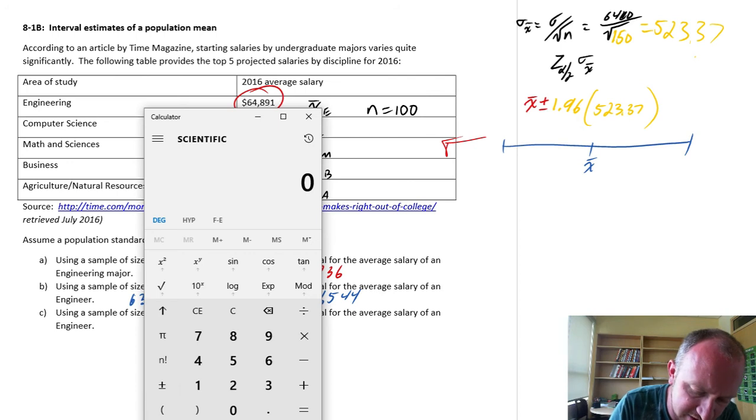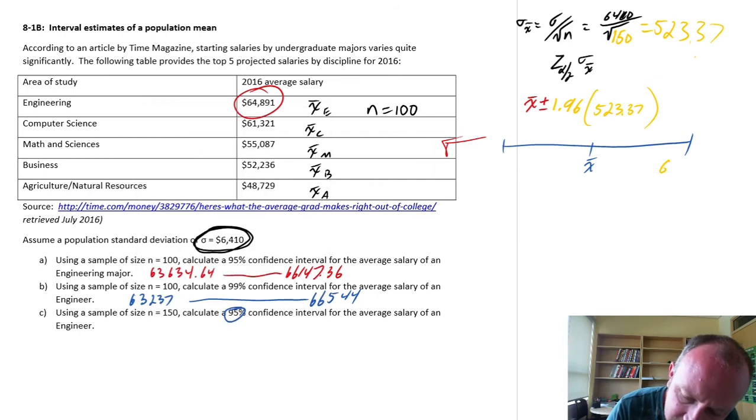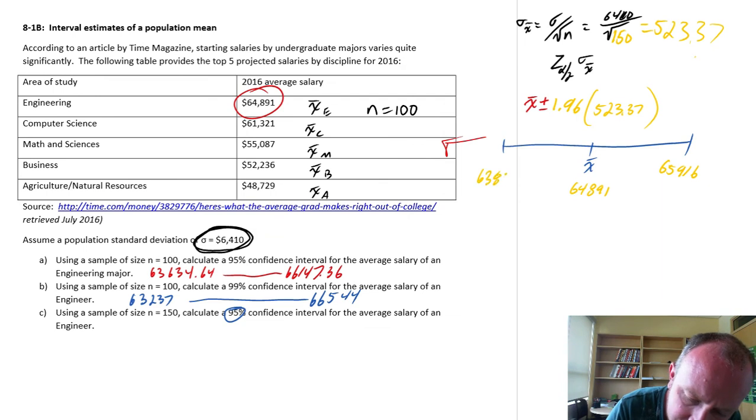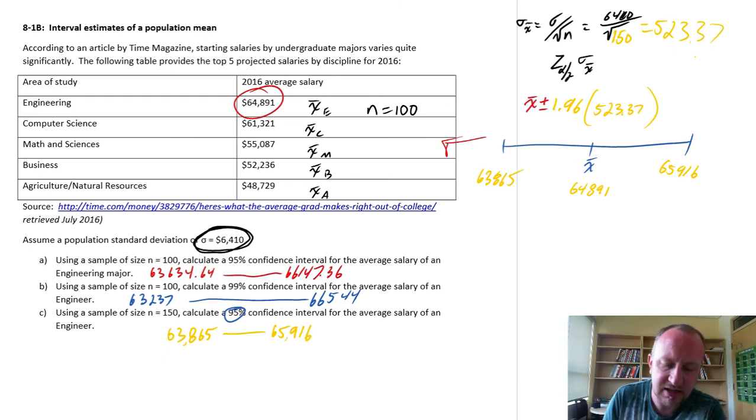So let's do some calculations here. This is now 1.96. Let's start with our mean. $64,891 plus 1.96 times $523.37, so $65,916. And that's from that same mean, $64,891. And now the lower limit, $64,891 minus 1.96 times $523, $63,865. So $63,865 to $65,916.